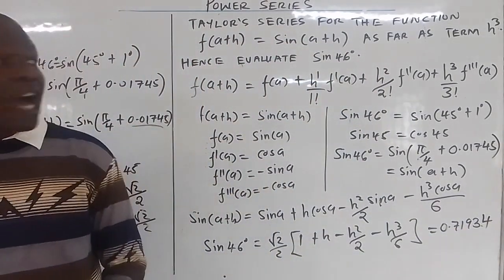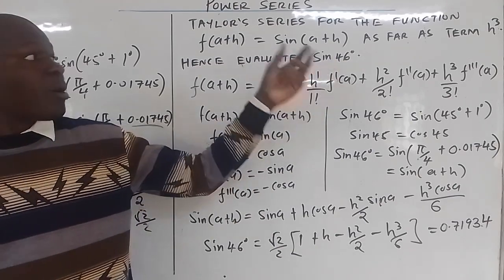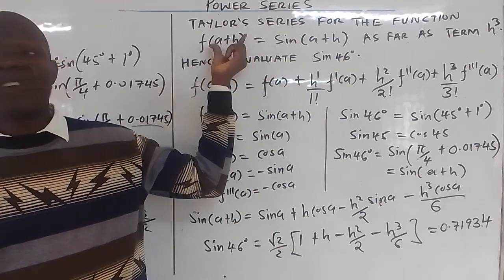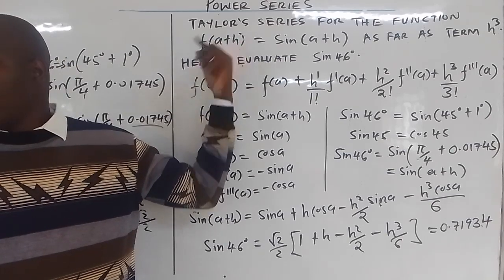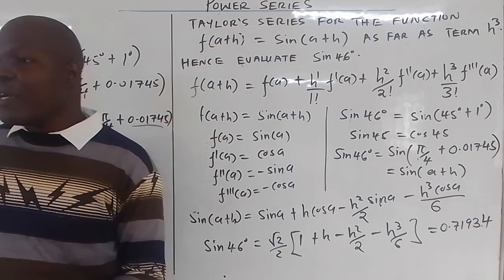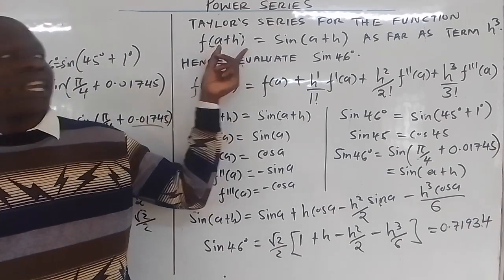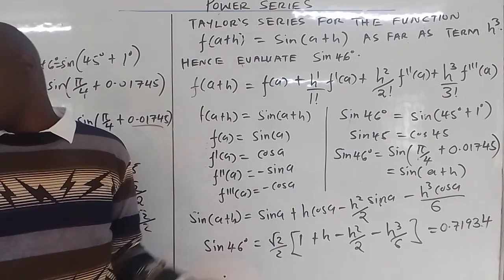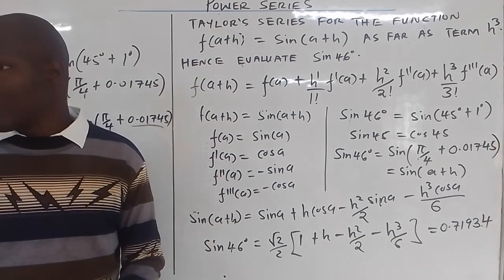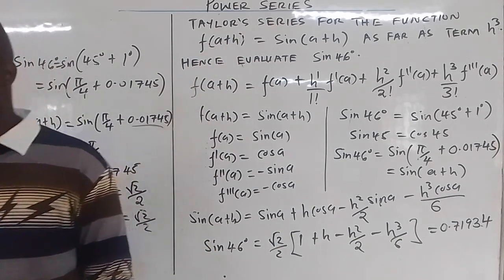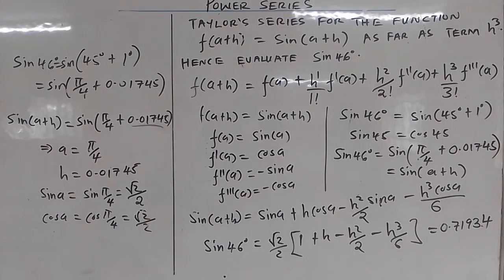So we have seen how to evaluate sin(46°) from the expansion of sin(a+h). In most cases they will say x+h — you just use the variable they have given. So sin(46°) ≈ 0.71934 correct to 5 decimal places.